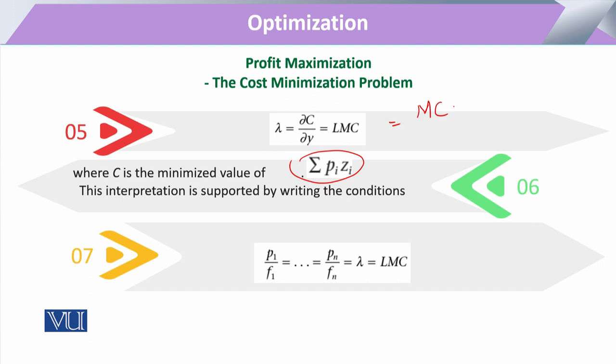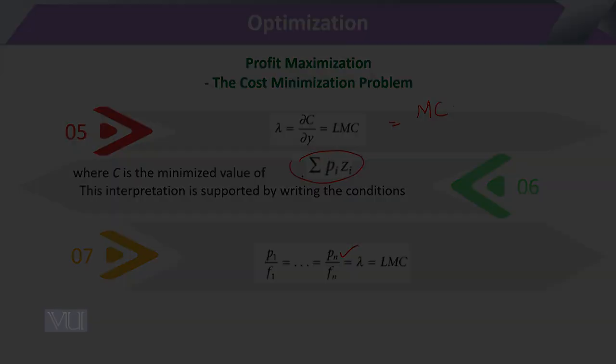When we say the minimized value of the submission of these cost functions, we interpret that we put the rest of the conditions. It will tell about the first variable, second variable, or the third. In the long run, it can be of n variable. It will be shown through lambda, and this lambda will be basically expressing the long-run marginal cost. Thank you.